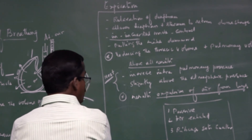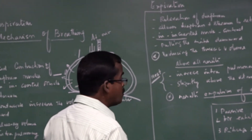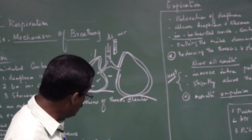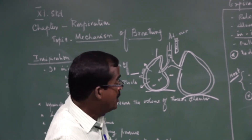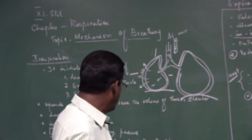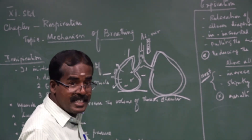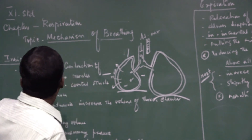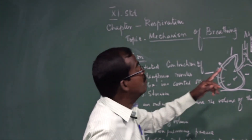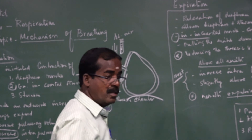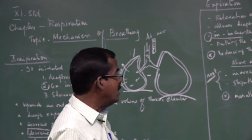Inspiration is an active process; expiration is a passive process. In inspiration, air is inhaled and the ribcage expands. In expiration, air is exhaled and the ribcage gets smaller. During inspiration, external intercostal muscles participate; during expiration, internal intercostal muscles participate.